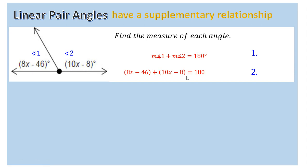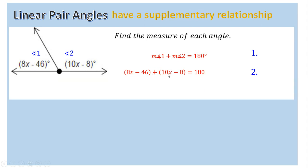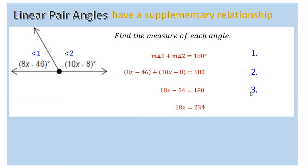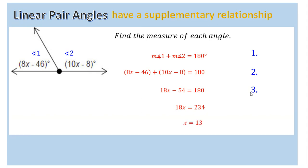After substituting, it's all algebra. Combine like terms: 8x and 10x give you 18x, and negative 46 plus negative 8 gives negative 54. So you have 18x minus 54 equals 180. Add 54 to both sides to get 18x equals 234, then divide by 18 to get x equals 13. So you're done with step 3 — solving for x.